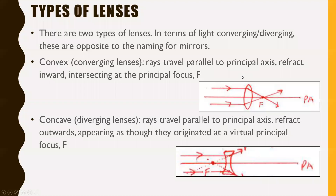There are two types of lenses in terms of light converging and diverging. These are opposite to the naming for mirrors — not in terms of the shape, just in terms of how light bends. A convex lens is also called a converging lens. This is backwards from mirrors, because convex mirrors were diverging mirrors. With lenses, it's the other way around.